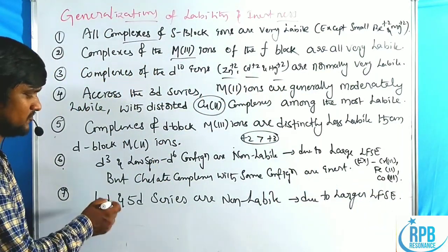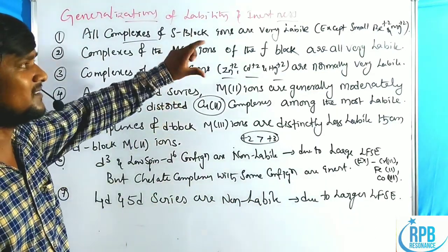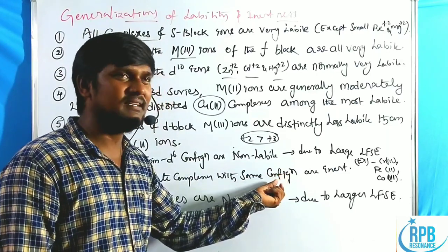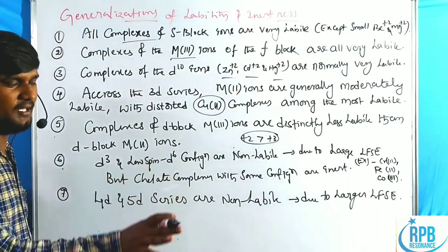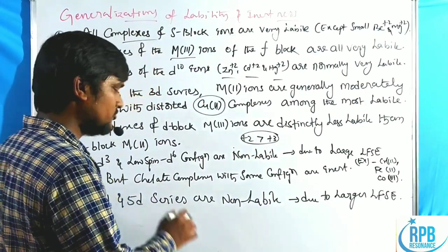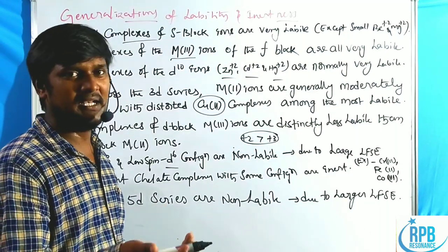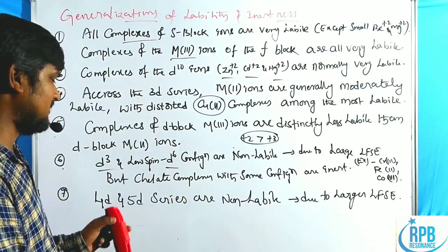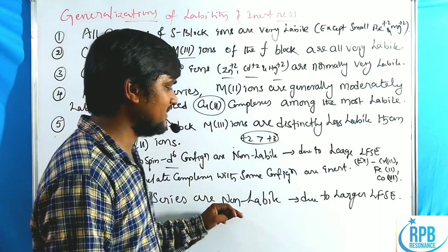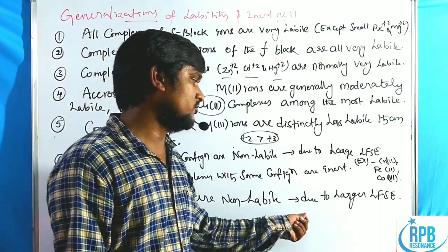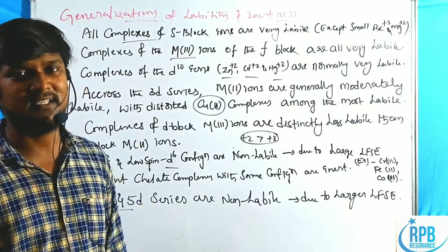D3 and D6 configurations with chelating complexes — like Fe(bipy)3 — are completely inert. The final point: 4D and 5D series, meaning rhodium-iridium and ruthenium-osmium series, are non-labile — very close to inert — due to their larger LFSE values. These points are very helpful to predict the lability and inertness of complex compounds.